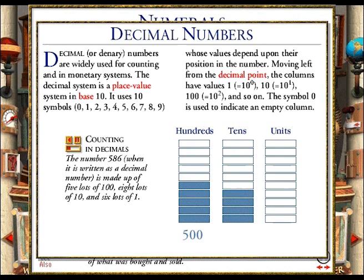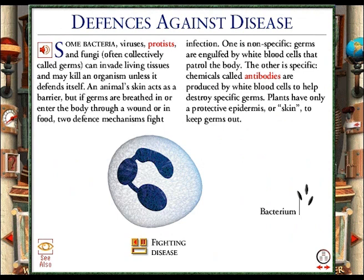By placing five in the hundreds column, eight in the tens column, and six in the ones column, we can see how the decimal number, 586, is put together.